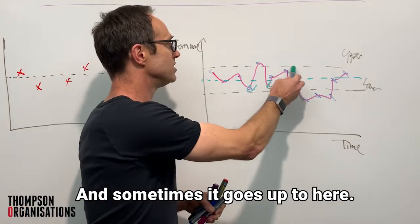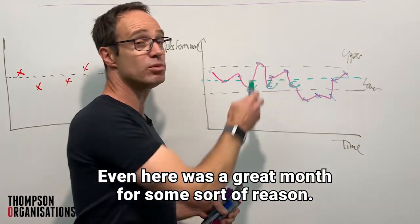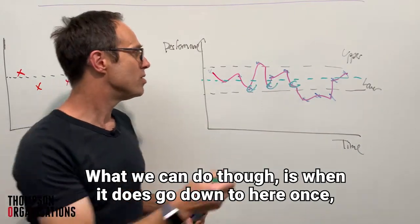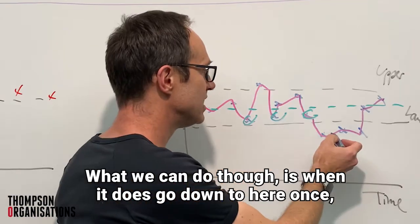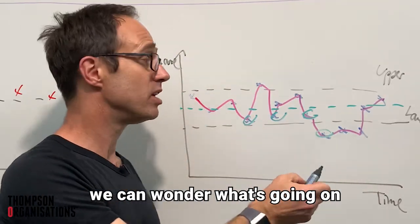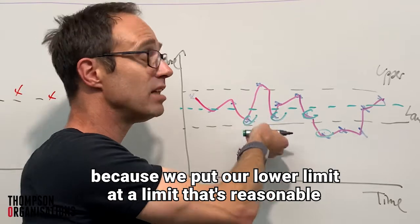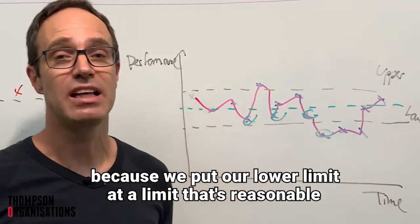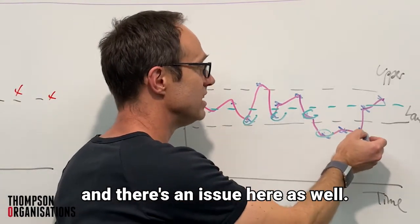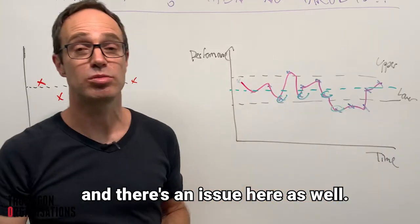Sometimes it goes up to here — even here was a great month for some reason. What we can do is, when performance does go down to here once, we can wonder what's going on, because we've put our lower limit at a level that's reasonable. And there's an issue here and there's an issue here as well.